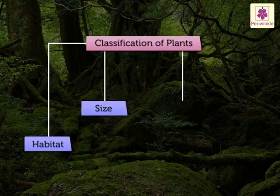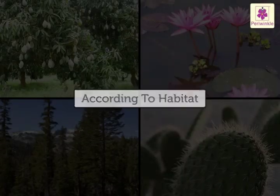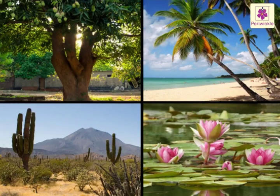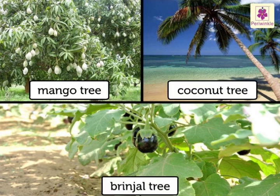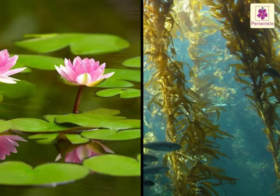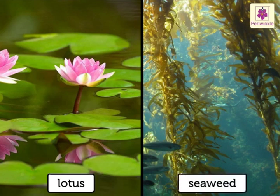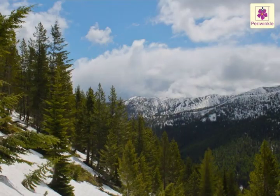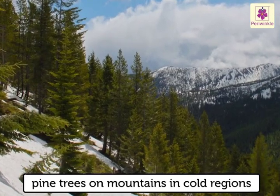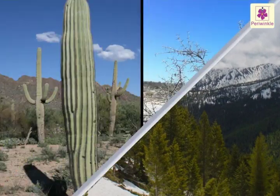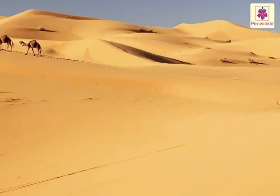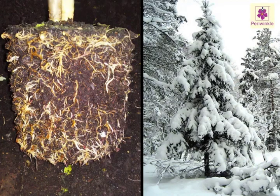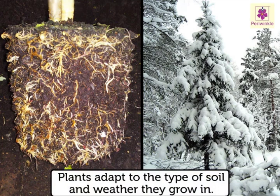According to habitat, plants grow everywhere. Plants like the mango tree, coconut tree, and brinjal tree grow on land. Plants like lotus and seaweed grow in water. Plants like pine trees grow on mountains where it is very cold. Plants like cactus and thorny bushes grow in deserts where the weather is hot and dry. Like us, plants learn to adapt to the type of soil and weather they grow in.